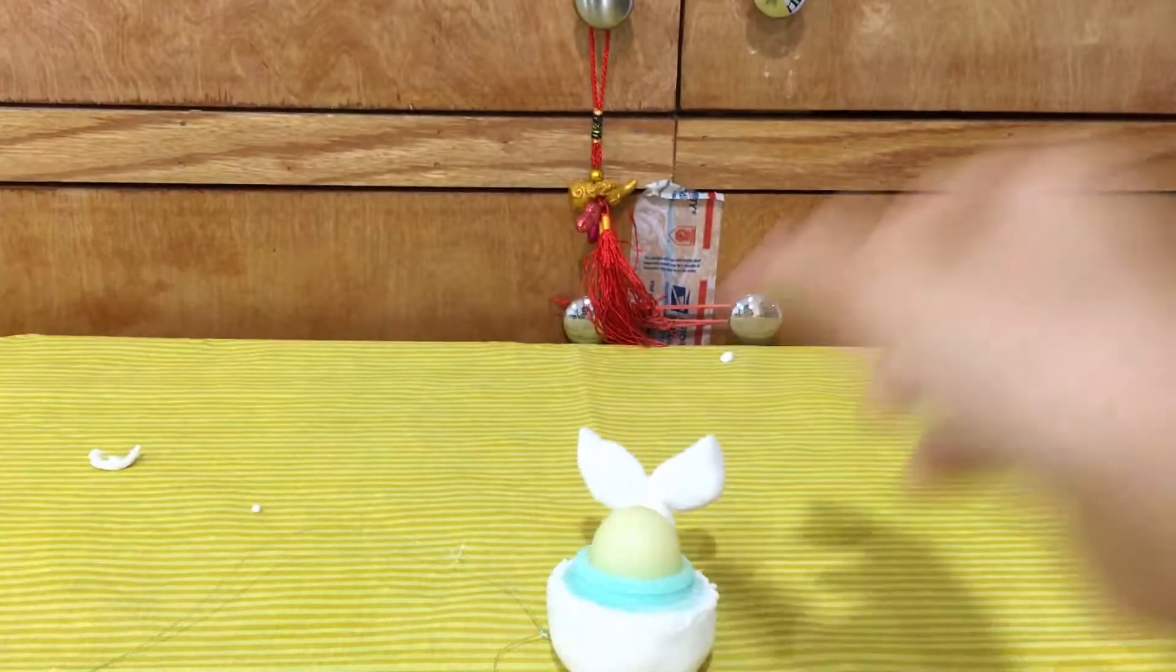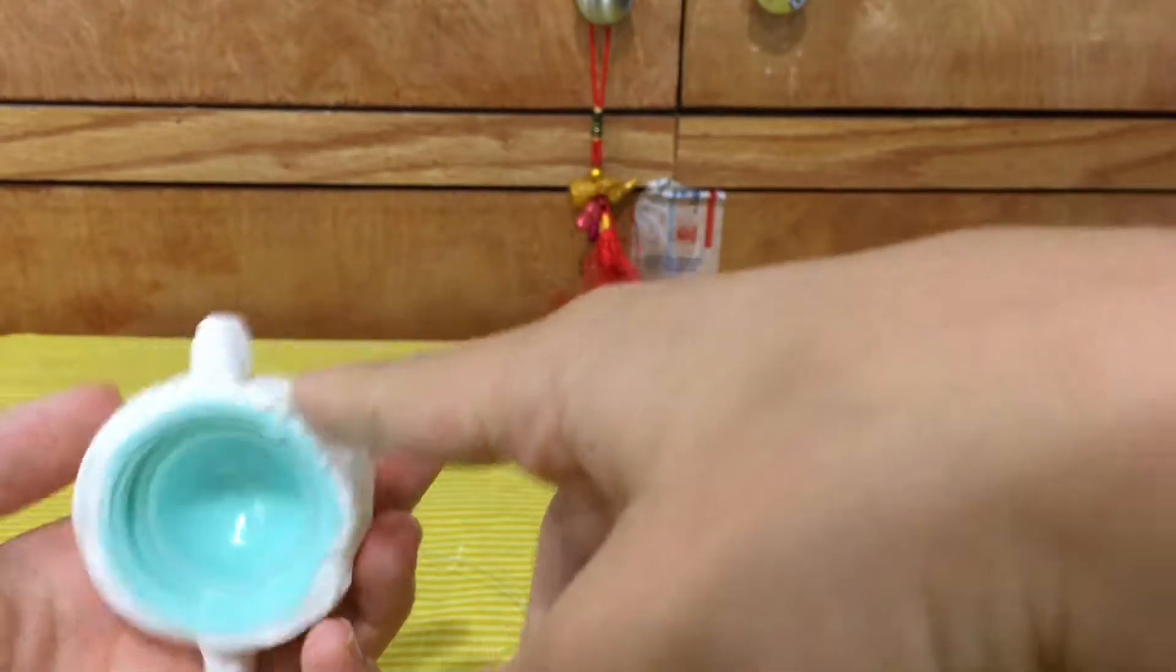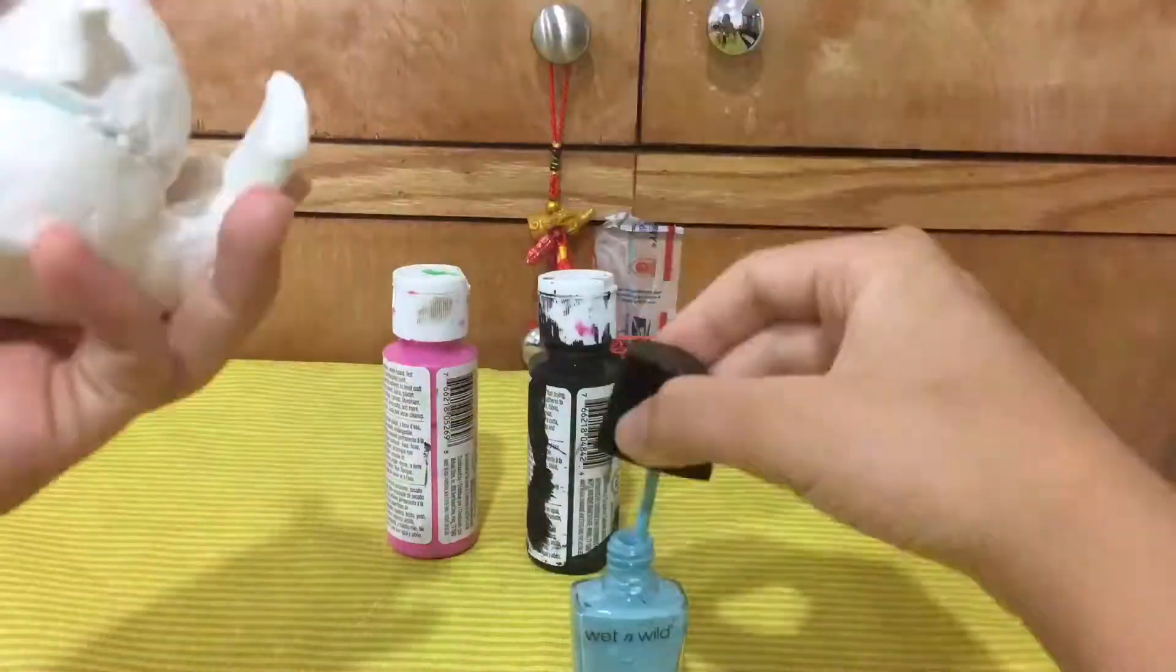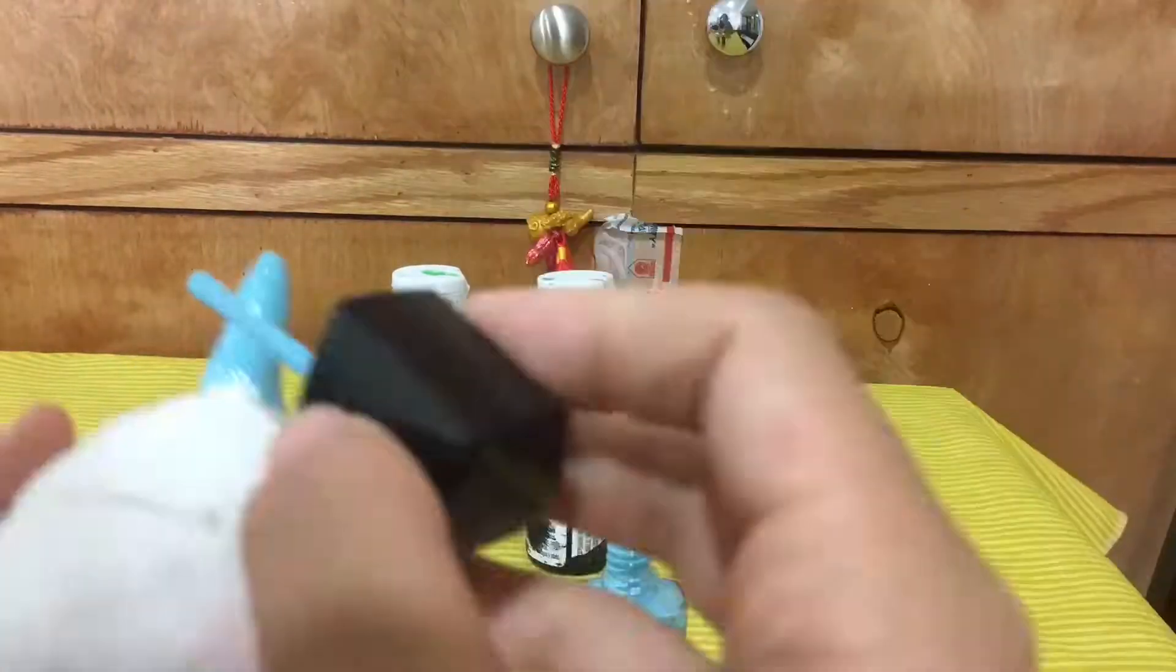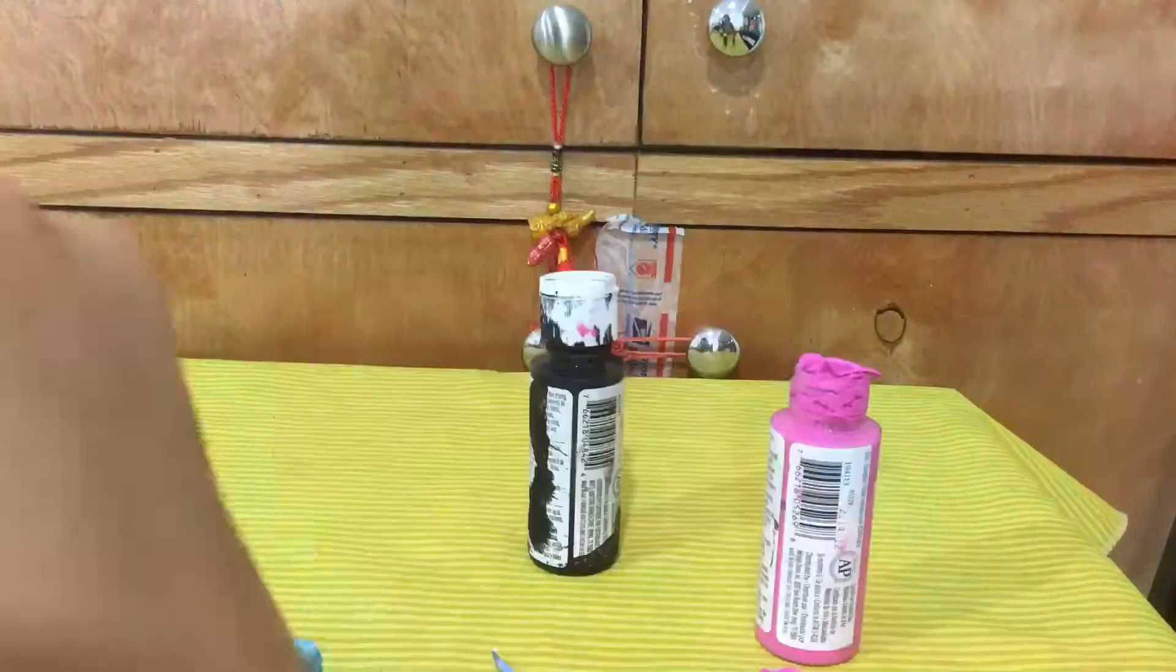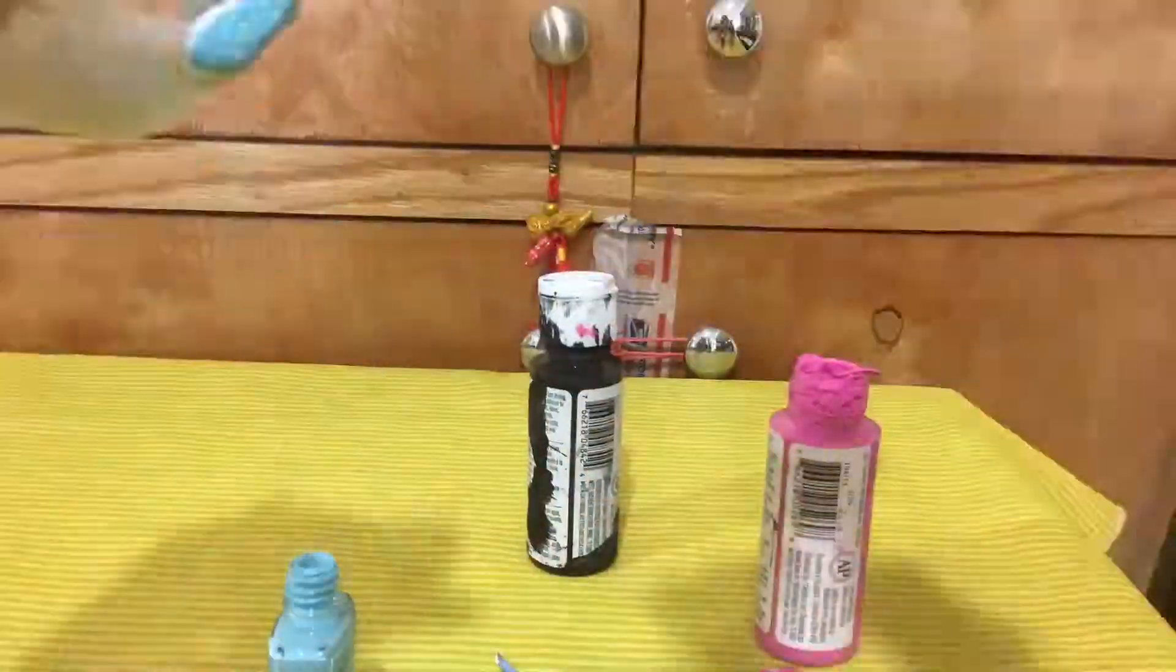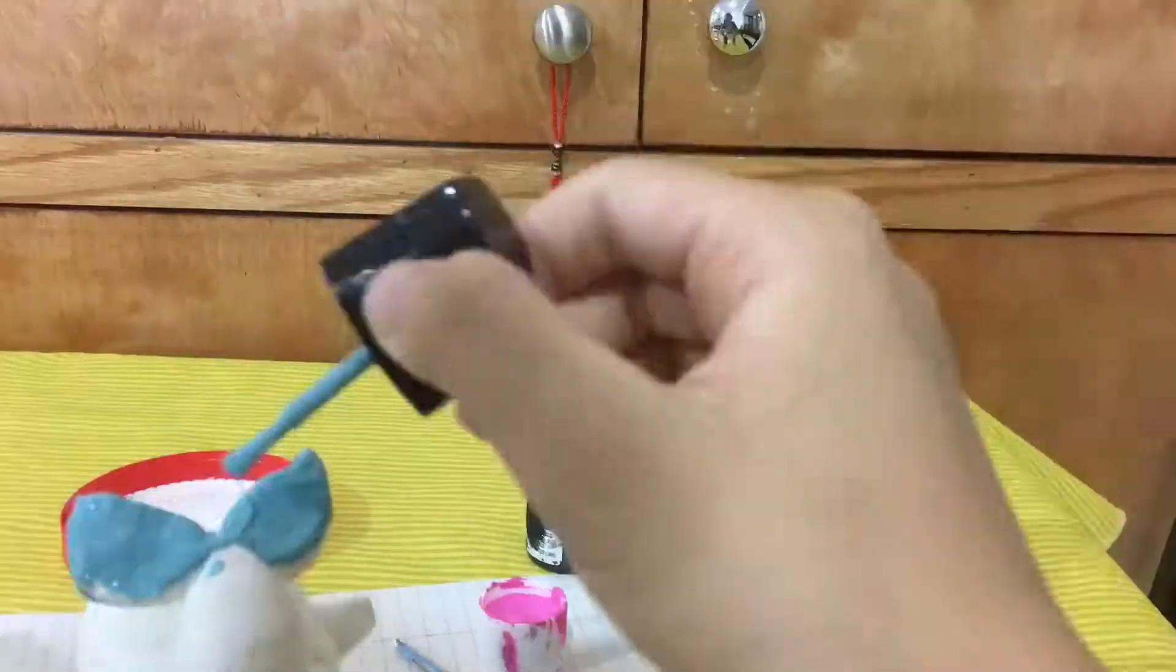Take however much you feel is right and smush it around. Roll it like a hot dog, making it thin on one side and thicker on the other. This is the tail portion. Now smush it on the back of the narwhal's body so it looks like it has a tail coming out. You can use some water to smooth it.